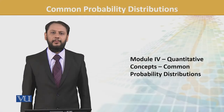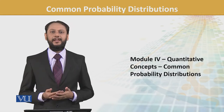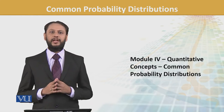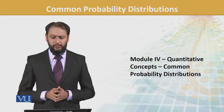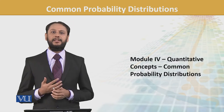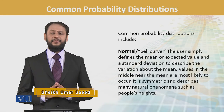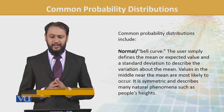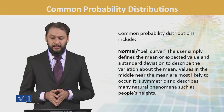Bismillahirrahmanirrahim. To start with — normal ya bell curve, is pe humne pehle badi baat ki hai normal distribution pe. The user simply defines the mean and expected value, and standard deviation describes the variation. Values in the middle near the mean are most likely to occur.